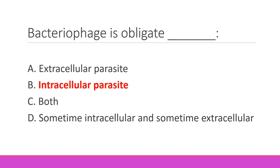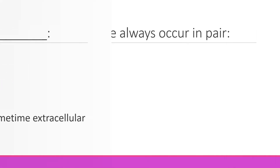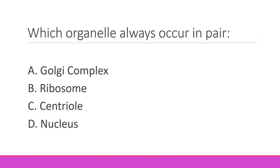Which organelle always occurs in pairs? That is the centriole. Right option C. Centrioles exist in pairs — one in parallel form and one in perpendicular form.